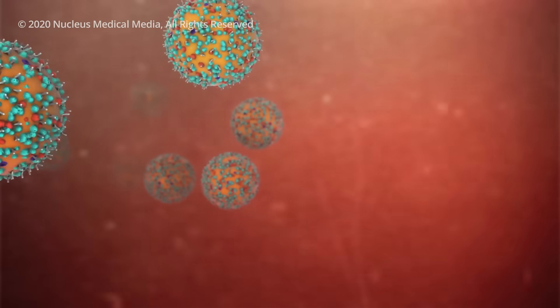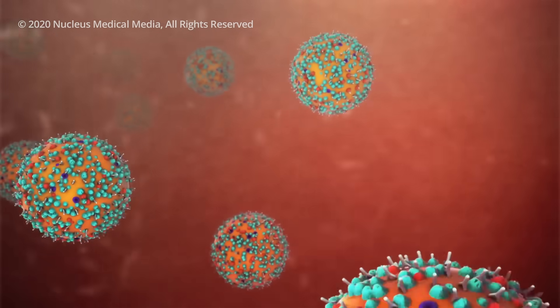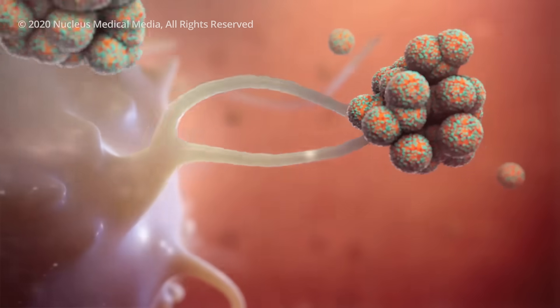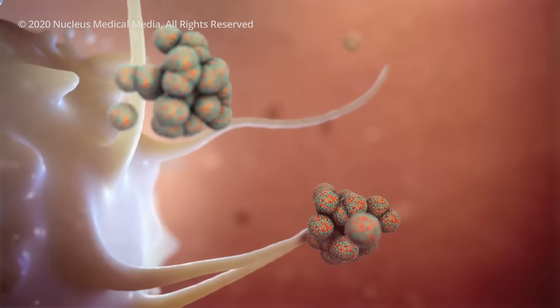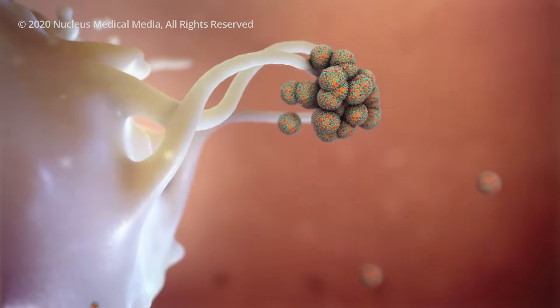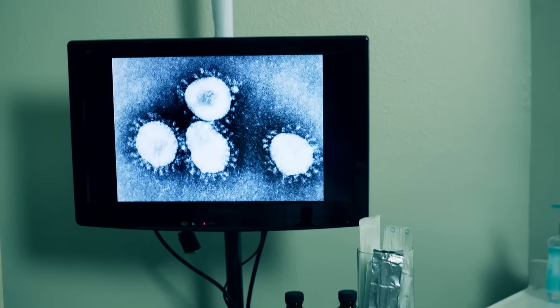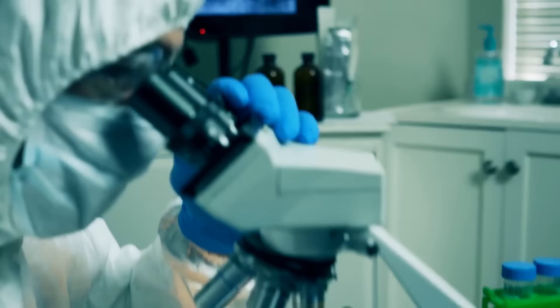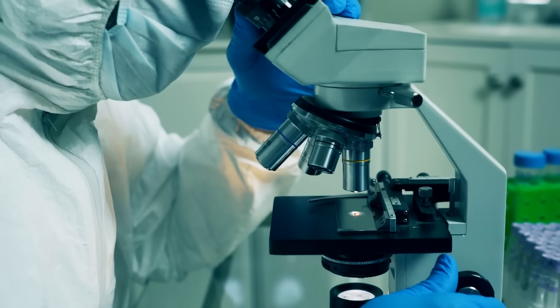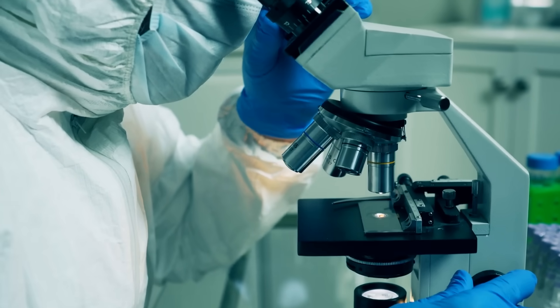If you then catch the real virus at a later stage, your body would recognize it and destroy it. In other words, your immune system is now primed. Collecting evidence on whether this will be possible, safe, and effective is part of what's taking researchers so long to develop a vaccine.